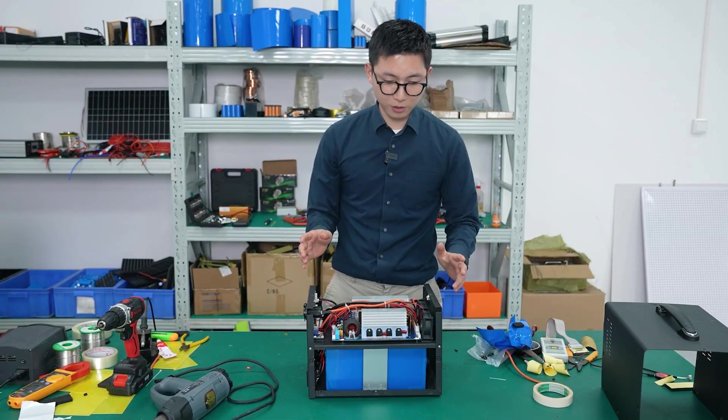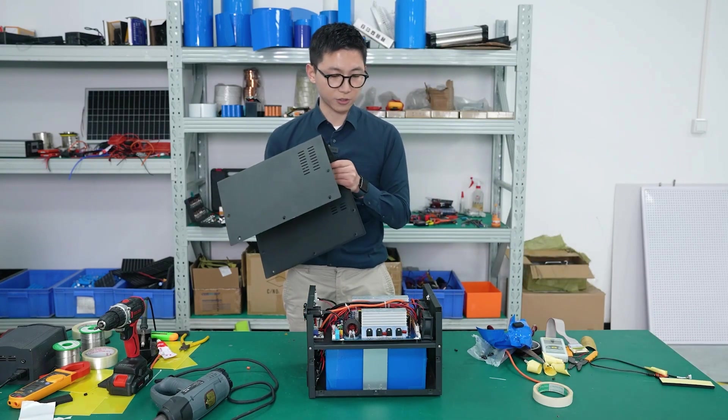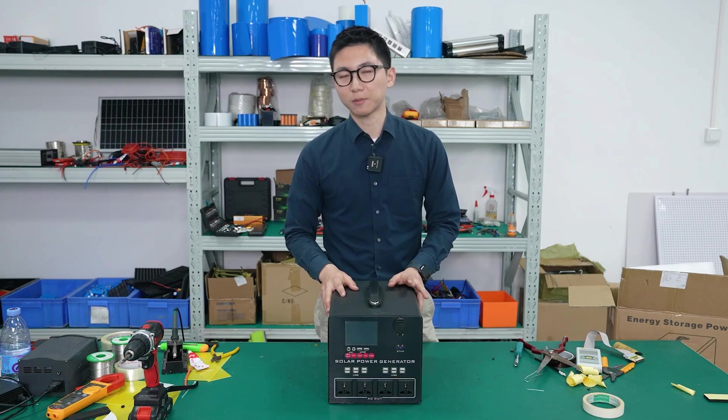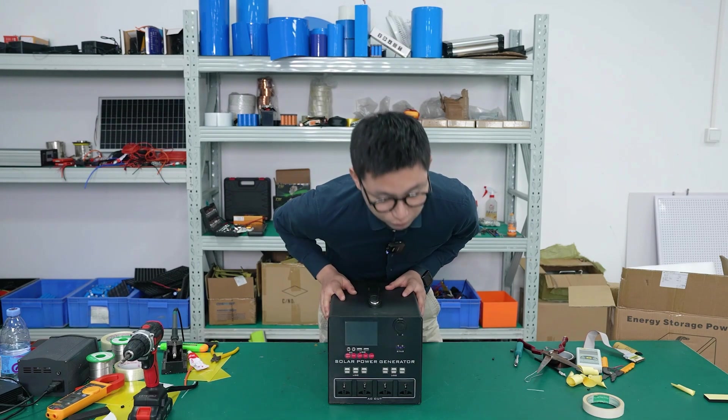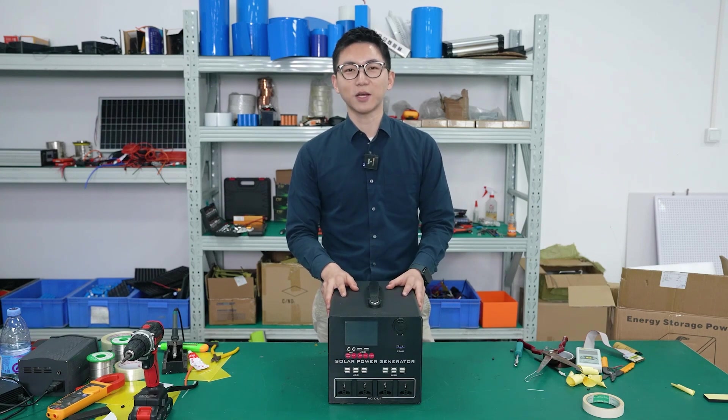So now we finished the assembly. The final step is the packaging. When finished, this is the outdoor power supply and also a solar power generator. Okay guys, what do you want to know next time? Leave your comments below and see you next time. Bye!